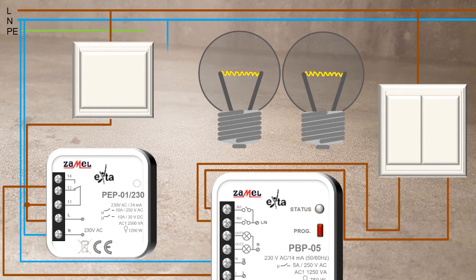Neutral wires coming from fittings connect permanently to the neutral potential. The phase wires of the fittings respectively lead to the first output marked as OUT1 and second output marked as OUT2 of the bistable relay PBP05.